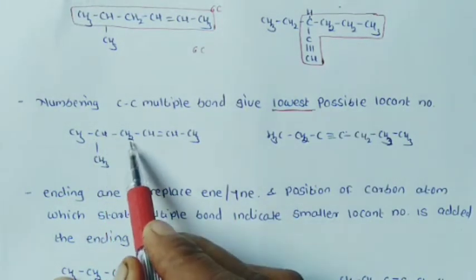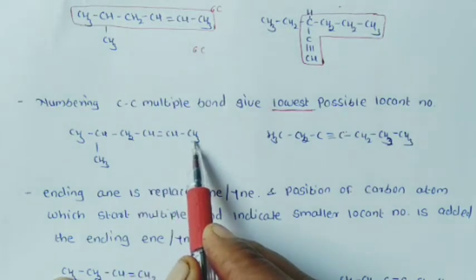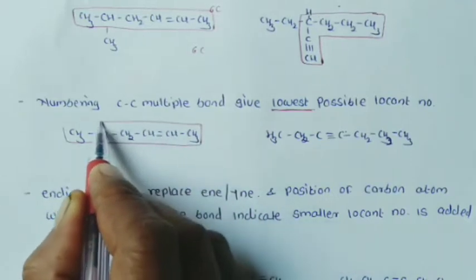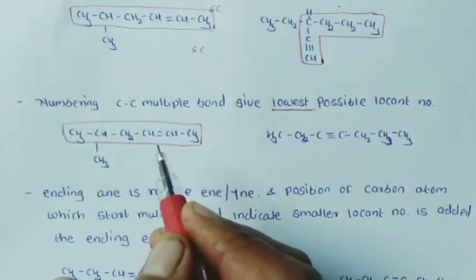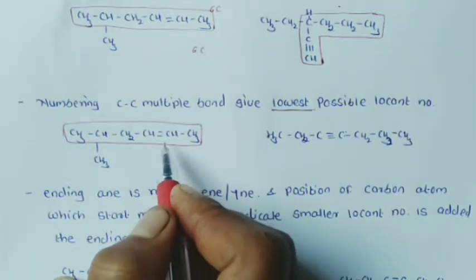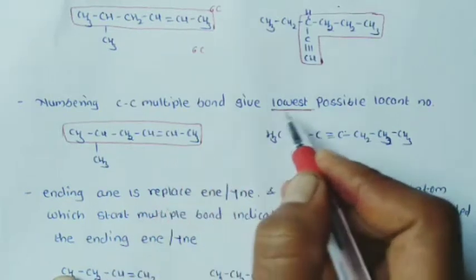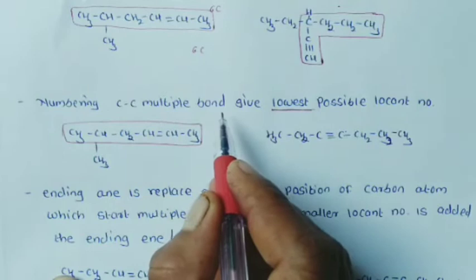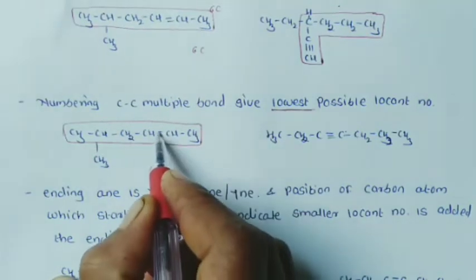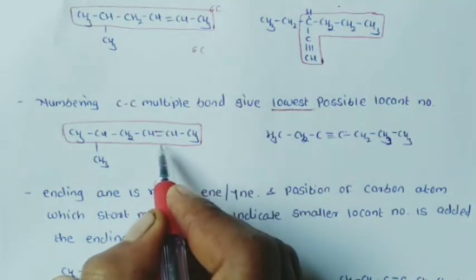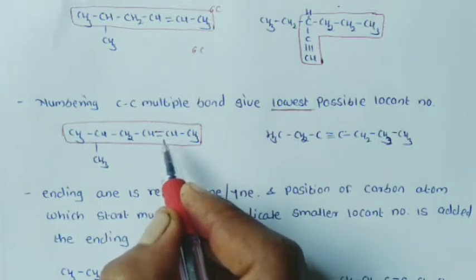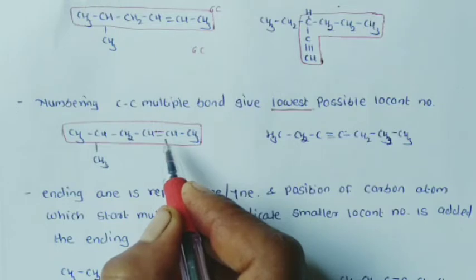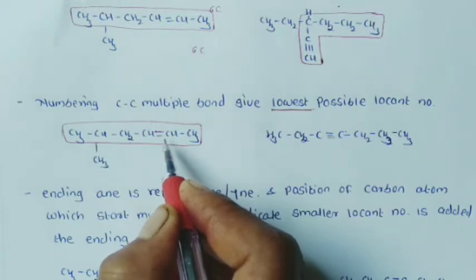For example: CH3-CH=CH-CH3 with CH2-CH=CH-CH3. We select the longest continued chain. The numbering of this carbon chain gives the lowest possible locant to the carbon-carbon multiple bond. Here we select the carbon-carbon double bond — this is an alkene. The numbering starts from the end nearest to the double bond.